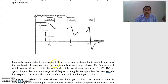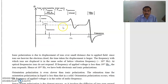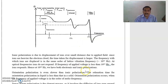Ionic polarization is due to displacement of ions over a small distance caused by the applied electric field. Since ions are heavier than the electron cloud, the time taken for displacement is larger. The frequency with which ions are displaced is in the same order as the lattice vibrational frequency, that is 10¹³ Hz. So, up to 10¹³ Hz, ionic polarization occurs. At optical frequencies, ions do not respond. If the frequency of the applied voltage is less than 10¹³ Hz, the ions respond. At 10¹³ Hz, both electronic and ionic polarizations occur.